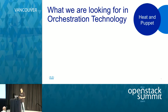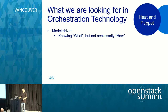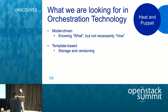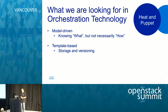That gives you background on the problem we're trying to address with Heat and Puppet. In designing the architecture, we looked at several criteria. We want to be model-driven — knowing what to orchestrate, not necessarily how, delegating to infrastructure management or other components. We look at template-based approaches: if you can define it as a template, you can store it, import it, export it, share it, move it between environments, edit it, version it, and extend it, adding capability as needed.